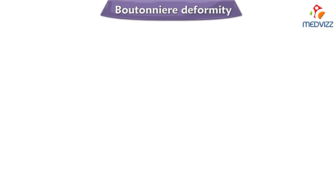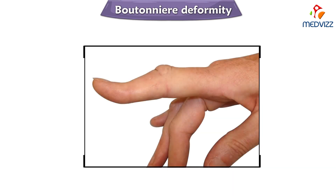Boutonnière deformity is mainly used to describe a deformity of the resting finger in which the proximal interphalangeal joint is flexed. You can clearly see here the proximal interphalangeal joint is flexed and the distal interphalangeal joint is hyperextended. This is what is called boutonnière deformity.